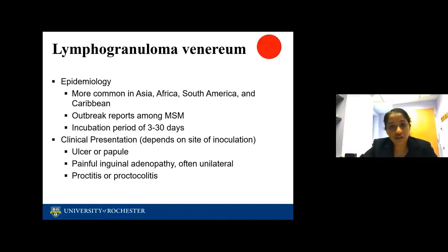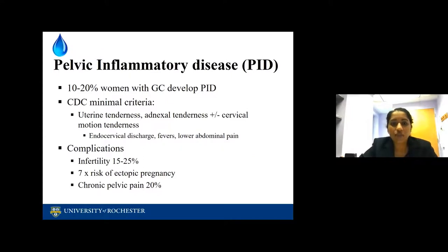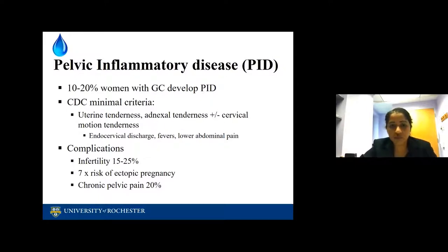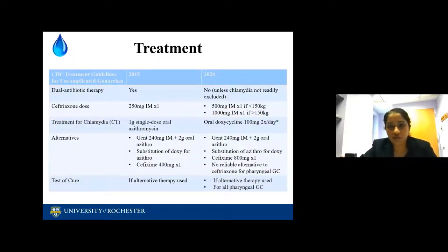The LGV variety does not present as a drip — it presents as a sore, ulcer, or papule. It also presents with painful inguinal lymphadenopathy, often unilateral, proctitis, and proctocolitis. It's more common in Asia, Africa, South America, and the Caribbean. Pelvic inflammatory disease: GC can develop into PID in about 10 to 20%. Diagnostic criteria include uterine tenderness, adnexal tenderness, cervical motion tenderness, endocervical discharge, fevers, and lower abdominal pain. Consequences include infertility in 15 to 25% of patients, increased ectopic pregnancy risk by 7%, and chronic pelvic pain.